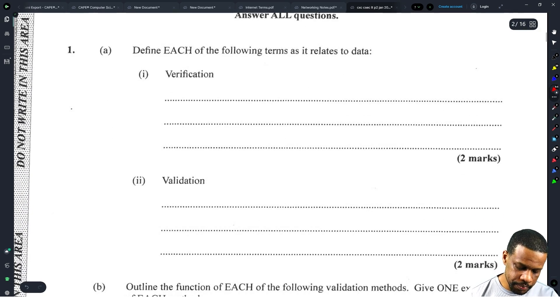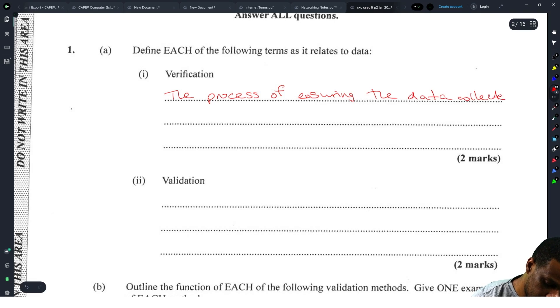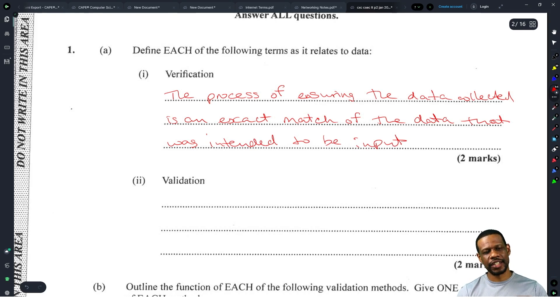Define each of the following terms as it relates to data. Verification is the process of ensuring the data collected is an exact match of the data that was intended to be input. Anything along those lines of 'it's exactly what I wanted to put into the system' you're good there, no problem.